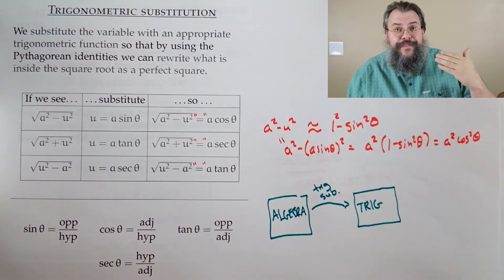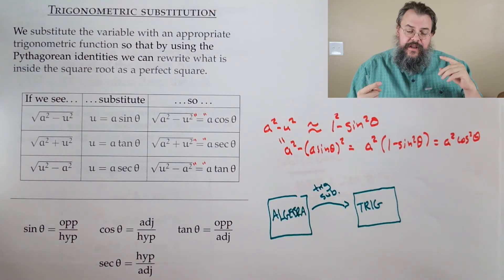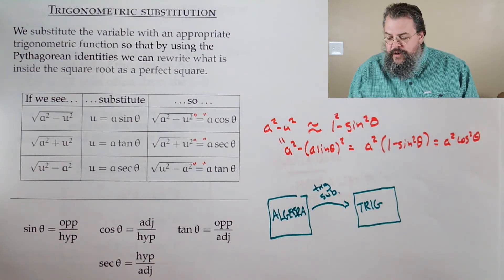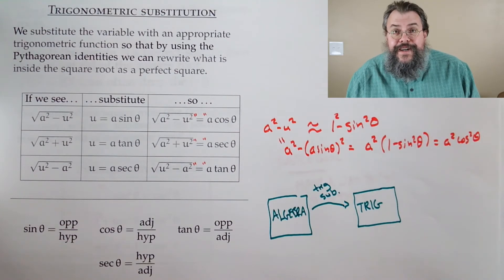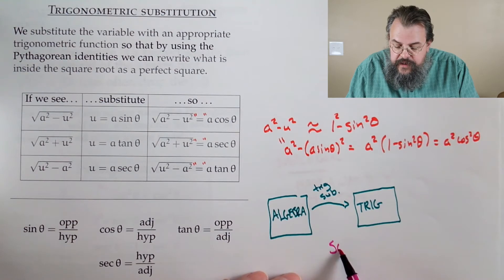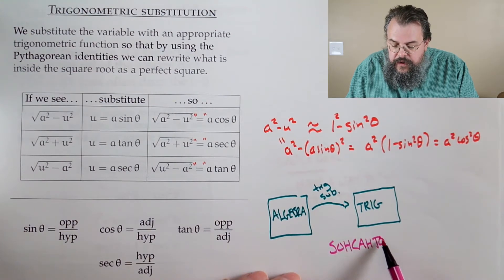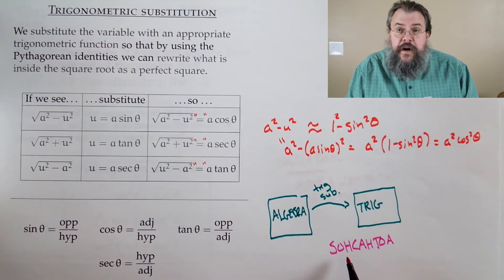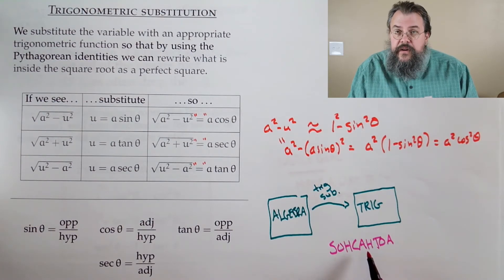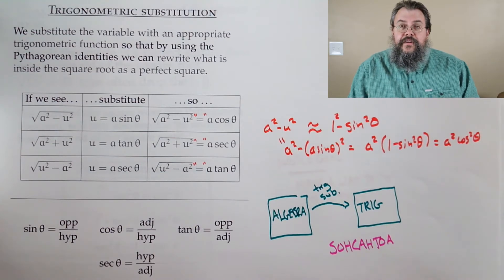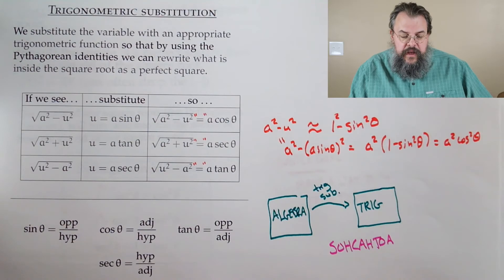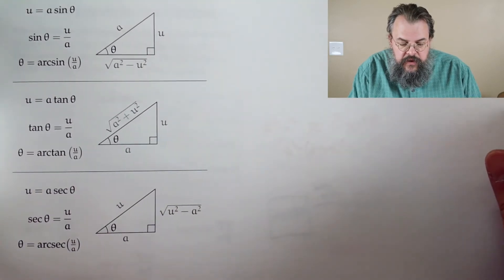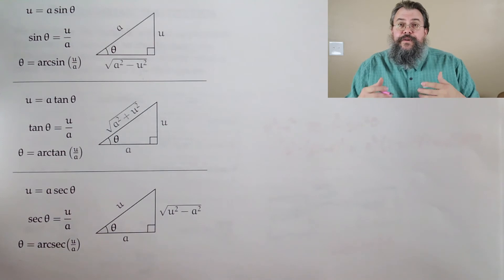It's important to make sure we have our trig down correctly. We need to understand how sine, cosine, tangent, and secant relate to triangles. You might remember the saying SOH-CAH-TOA: Sine is Opposite over Hypotenuse, Cosine is Adjacent over Hypotenuse, and Tangent is Opposite over Adjacent. That tells you the relationships in triangles, and it's important to understand when making our substitution.